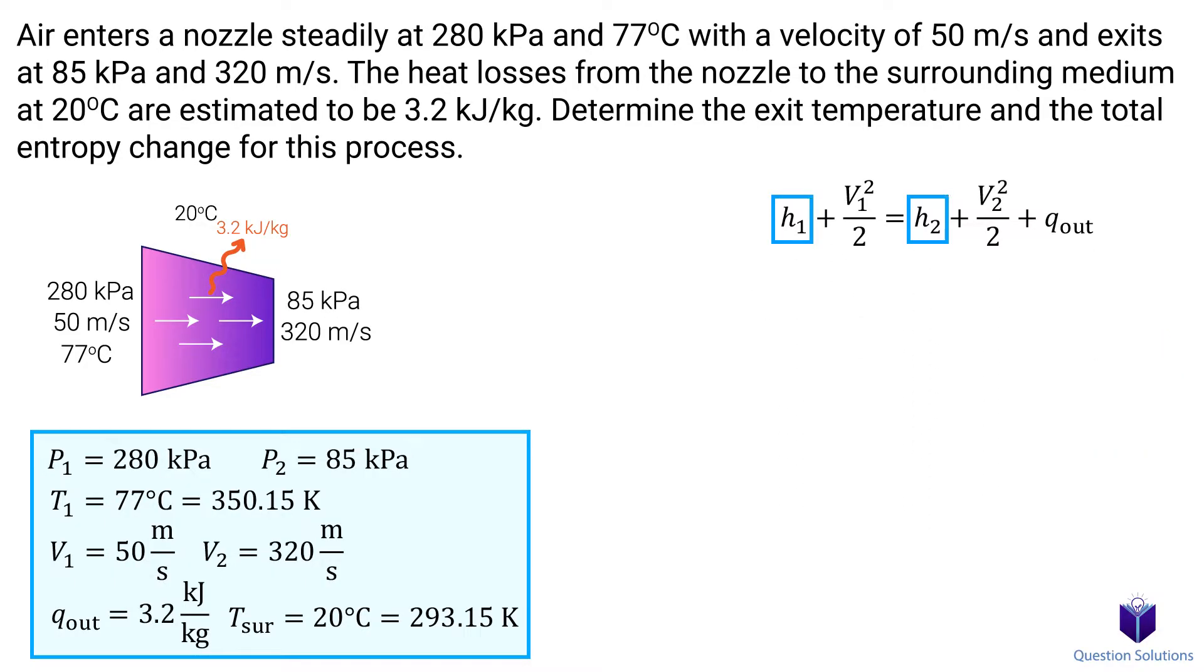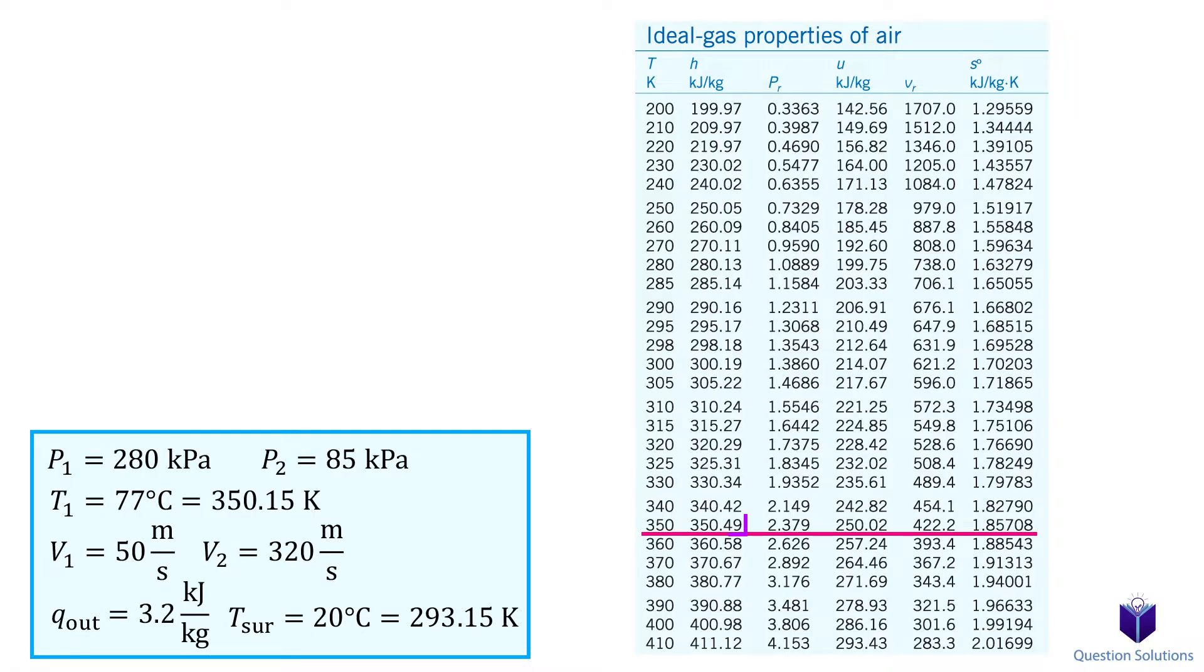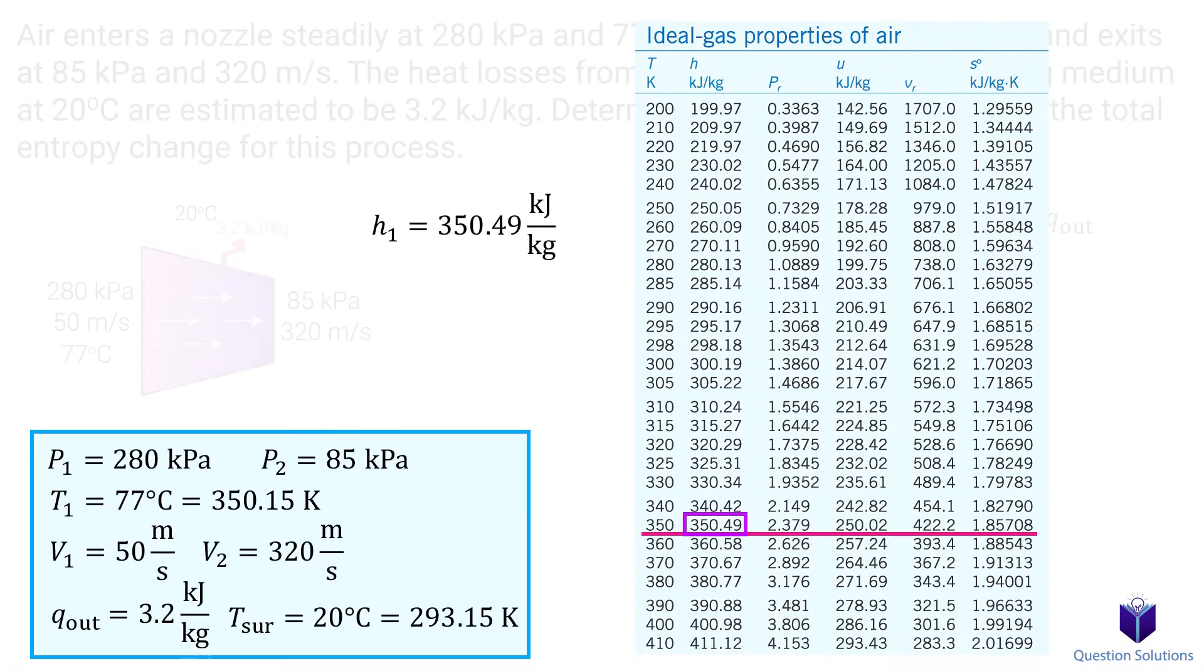We have a lot of givens for this equation. What we are missing is initial and final enthalpy. We can easily find the initial enthalpy using a temperature table. So looking at 350 Kelvin, here is our initial enthalpy.